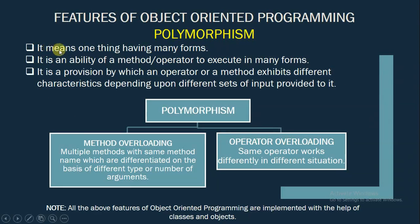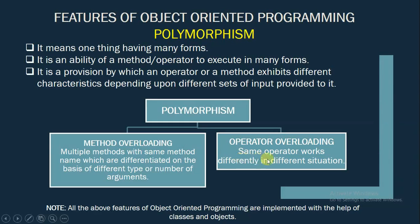Polymorphism means one thing having many forms. It is the ability of a method or operator to execute in many forms. It is a provision by which an operator or a method exhibits different characteristics depending upon different sets of input provided to it. Polymorphism can be of two types: method overloading and operator overloading. In method overloading, multiple methods which have the same name are differentiated on the basis of different types or number of arguments. However, in operator overloading, the same operator works differently in different situations.